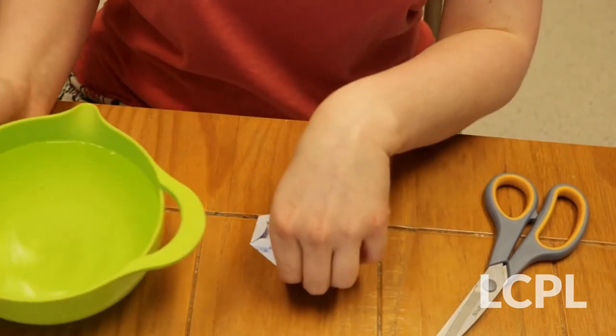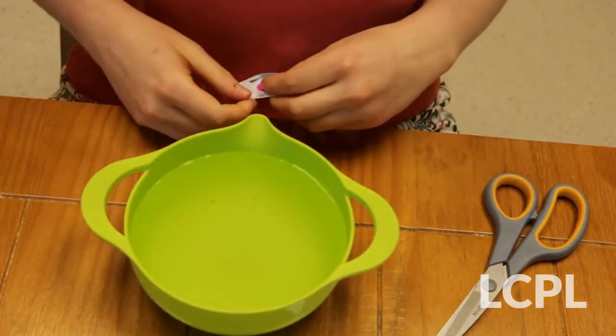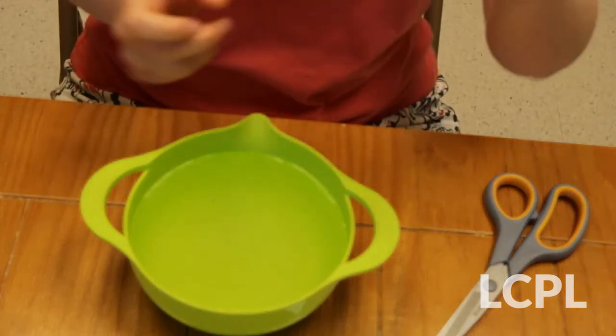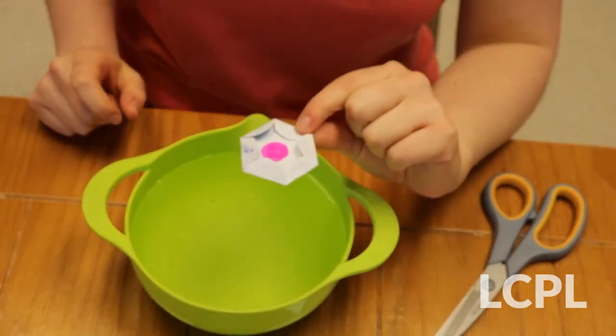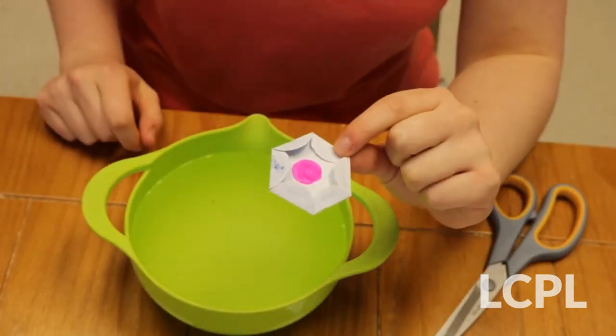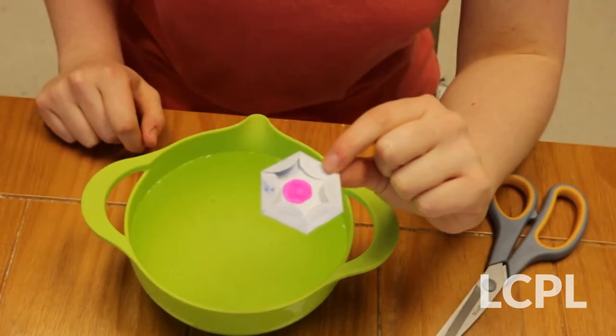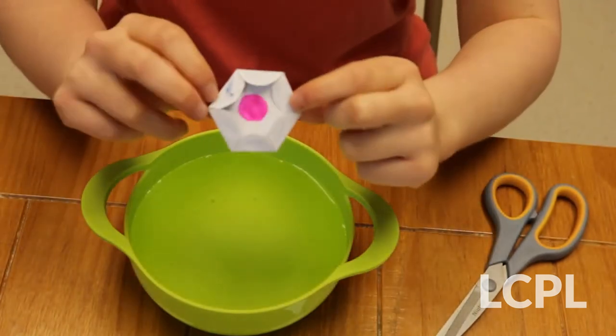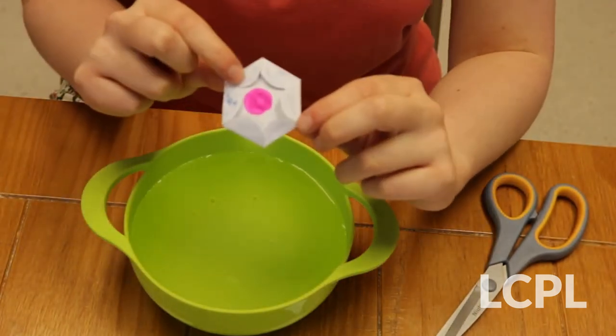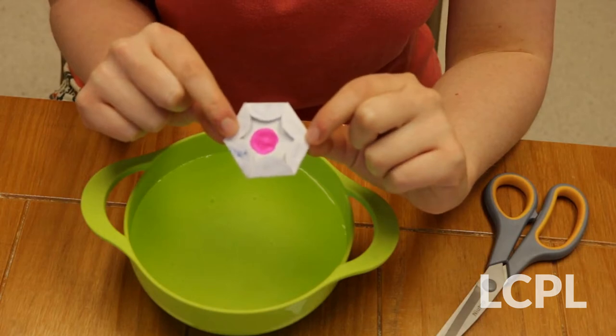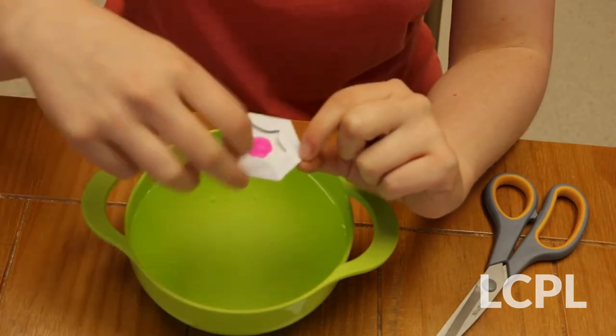And this is where our bowl of water comes in. So when we put the paper into the water, what do you think is going to happen? Well for one thing, this paper absorbs water, so when the paper absorbs water, that is going to make it bloom.